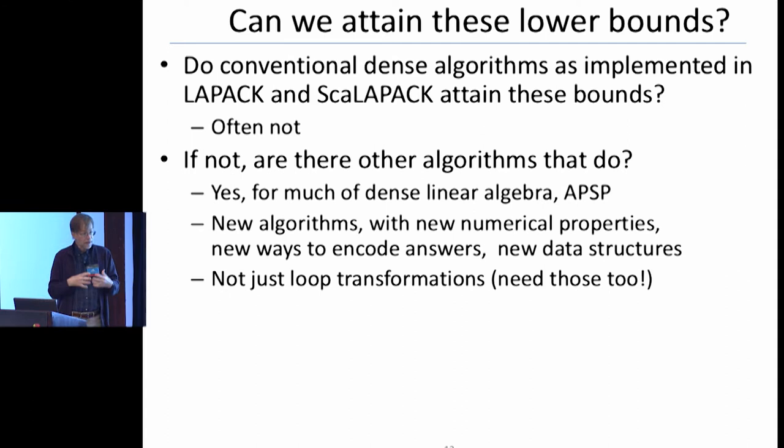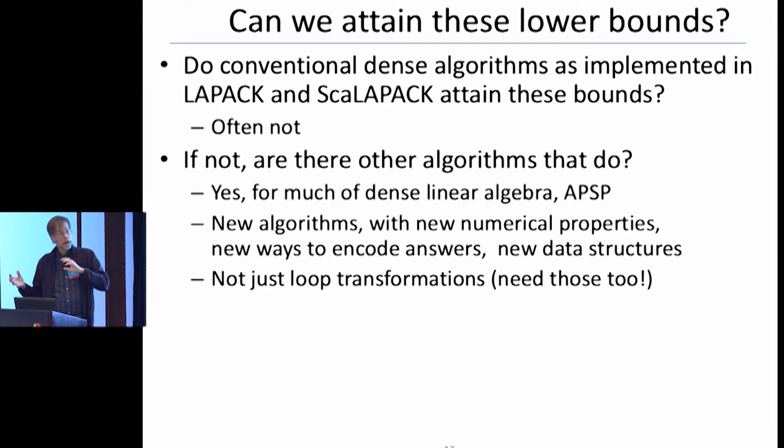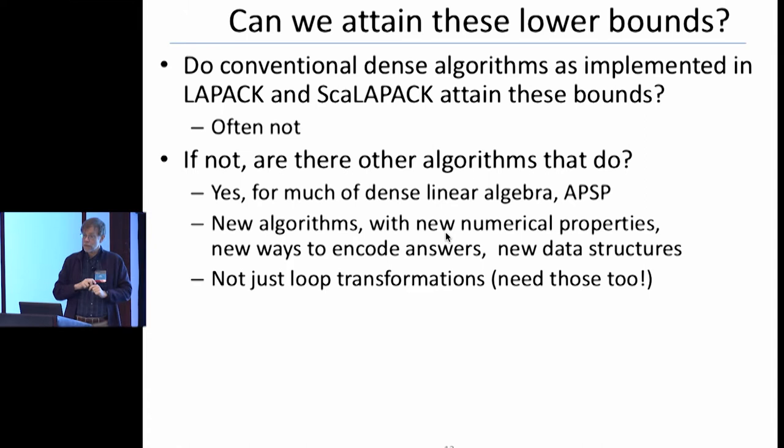Once we figured out these lower bounds, we asked: are we done? Is LAPACK and ScaLAPACK good enough? They typically were not — they typically did asymptotically more communication than necessary. So we began discovering new algorithms that attain the lower bounds. For matrix multiply, it was simply doing the same n-cubed operations in a different order with different data access patterns. But for algorithms like Gaussian elimination, we had to change the numerical algorithm — we had to abandon partial pivoting.